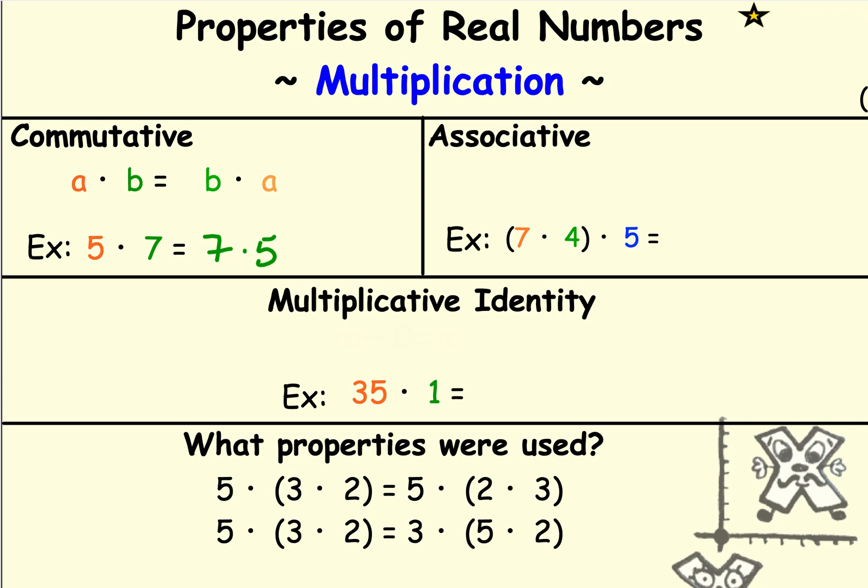The associative property tells us that we can group numbers that are being multiplied. I know 7 times 4 is 28, but 28 times 5 is kind of a pain to do. But because I know 4 times 5 is 20, and 20 times 7 is just 2 times 7 with a 0 at the end—it's 140—it's easier to do in my head. So I use the associative property to help me come up with the problem a little bit easier with my arithmetic.